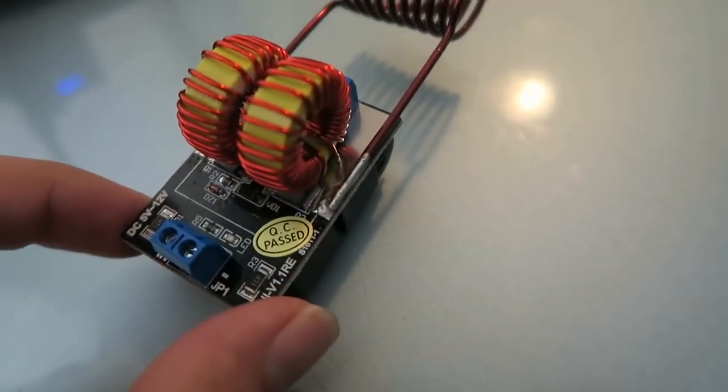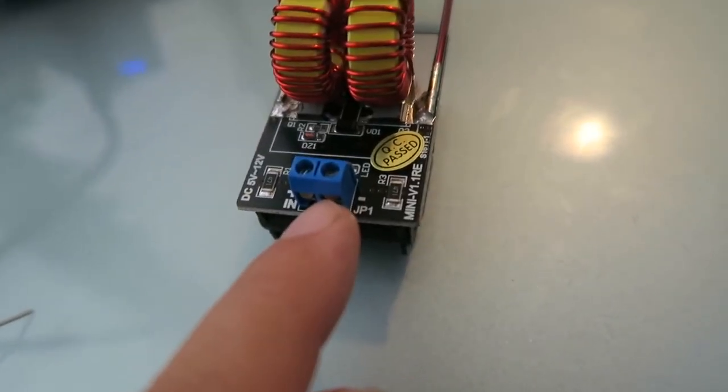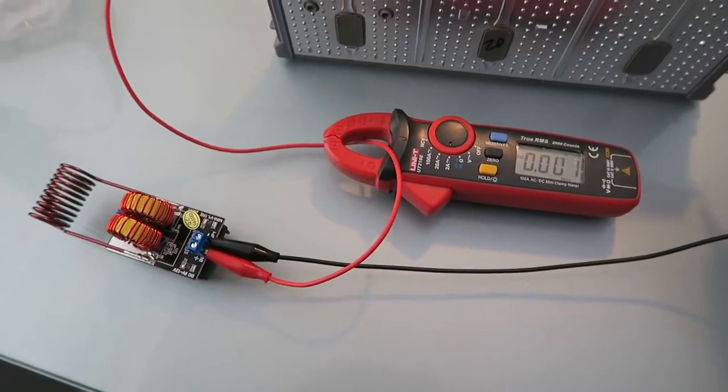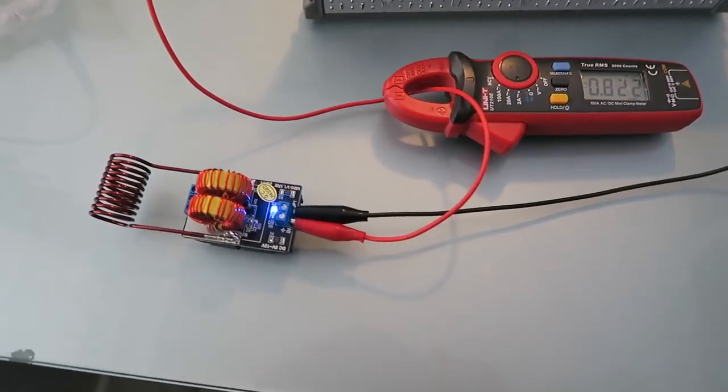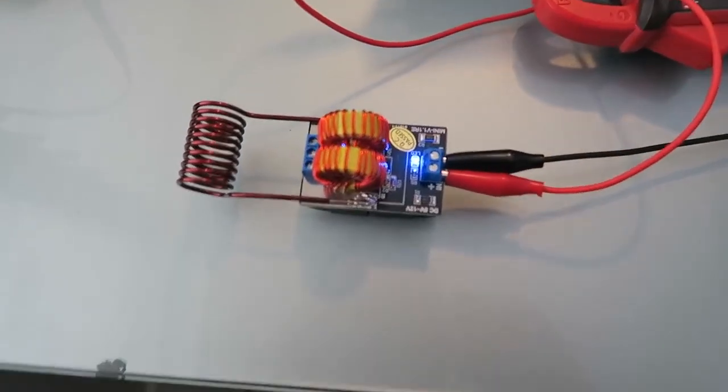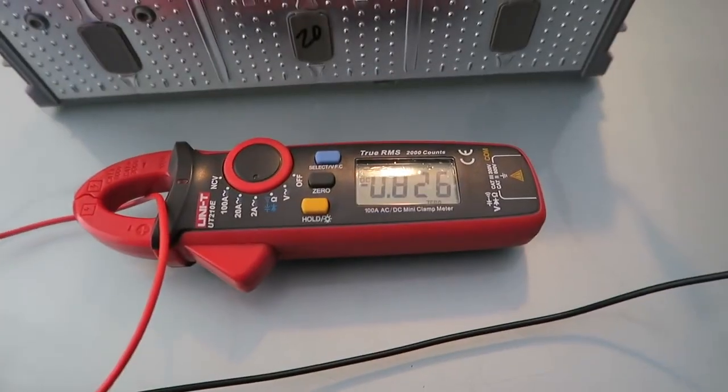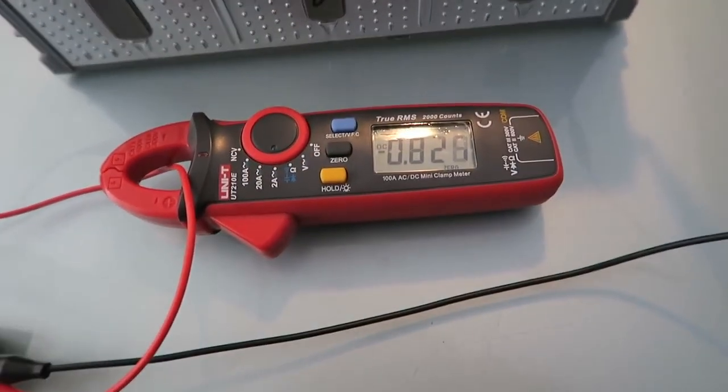So now we need to connect power to it right here and it should be ready to go. Okay something turned on. And we got a little light that is glowing right there. That's nice. So I guess it's running right now. It's drawing 0.826 milliamps.